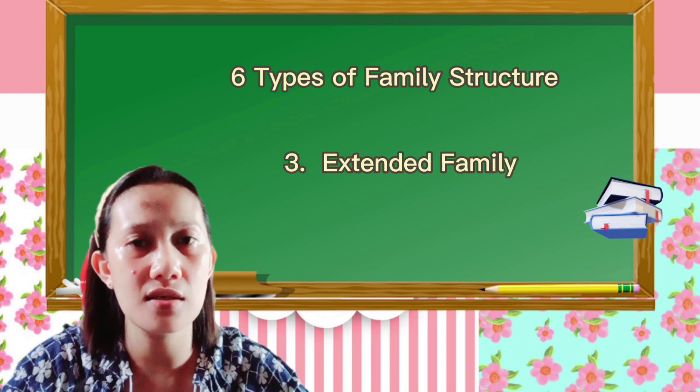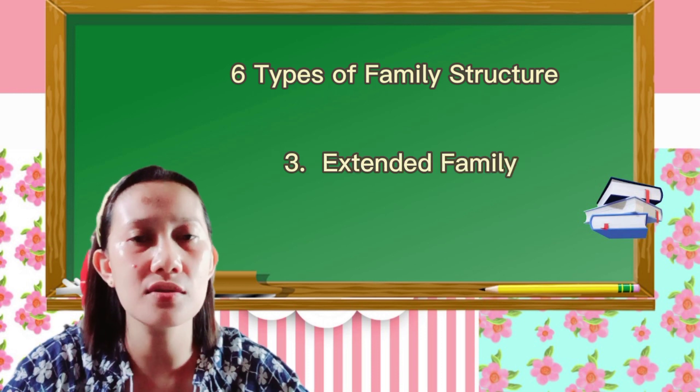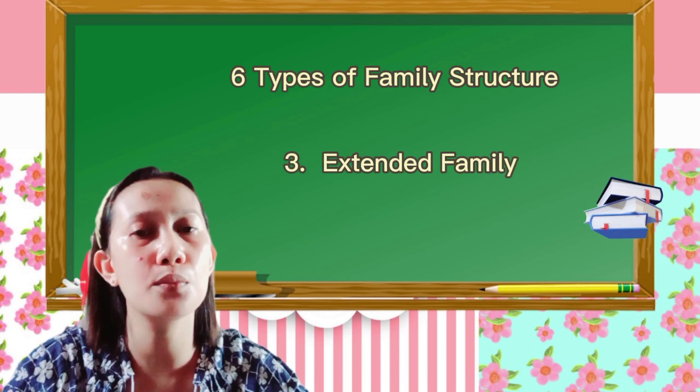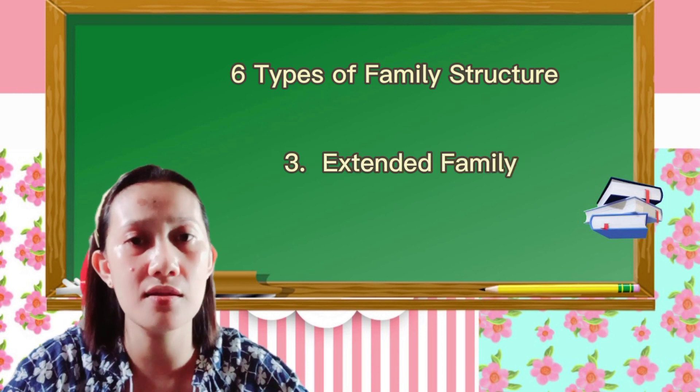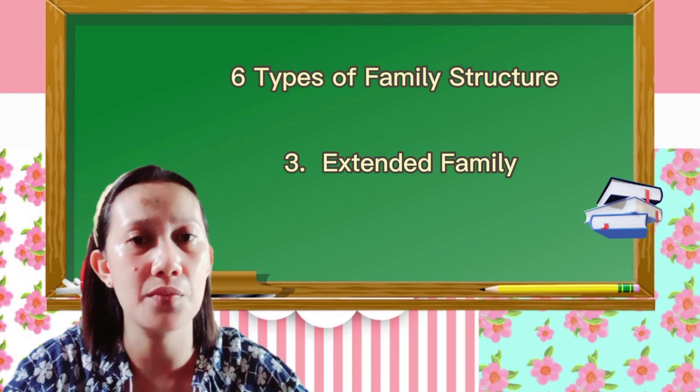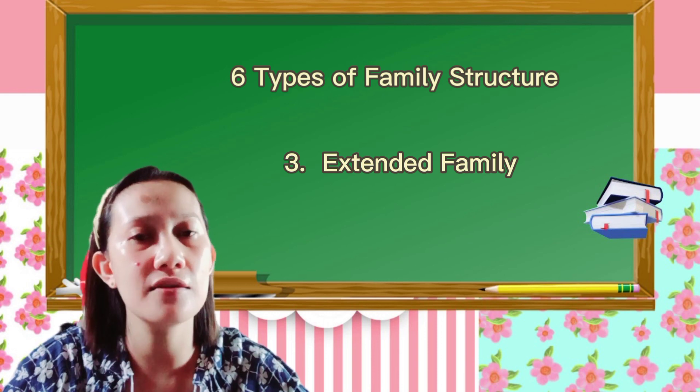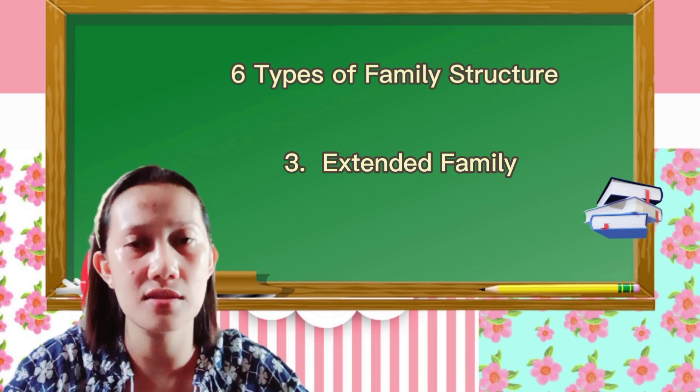Third is the extended family. It consists of two or more adults who are related either by blood or marriage living in the same home.